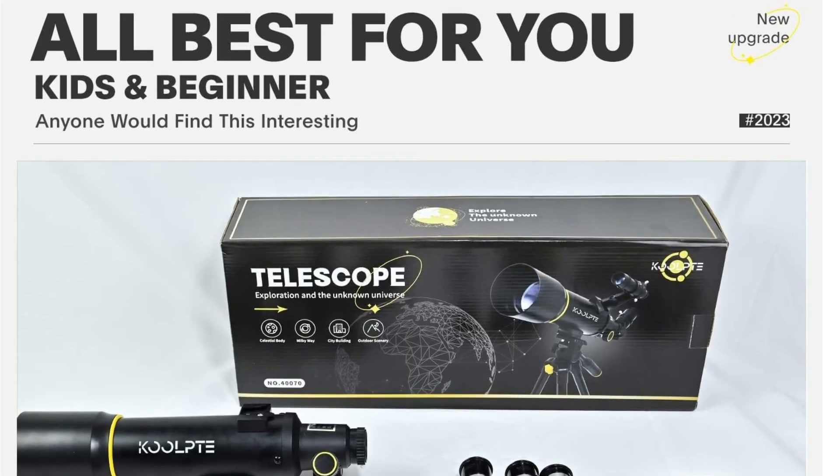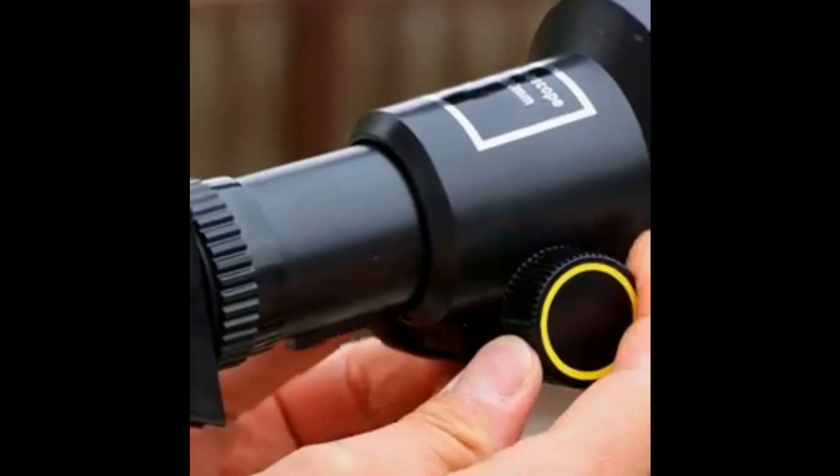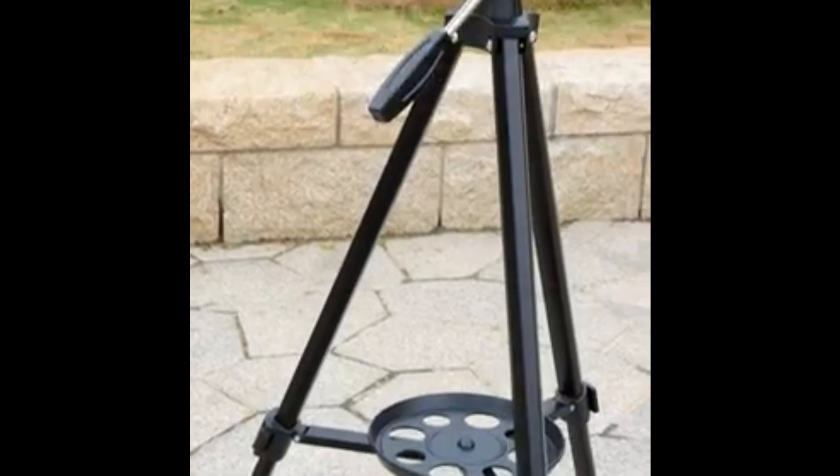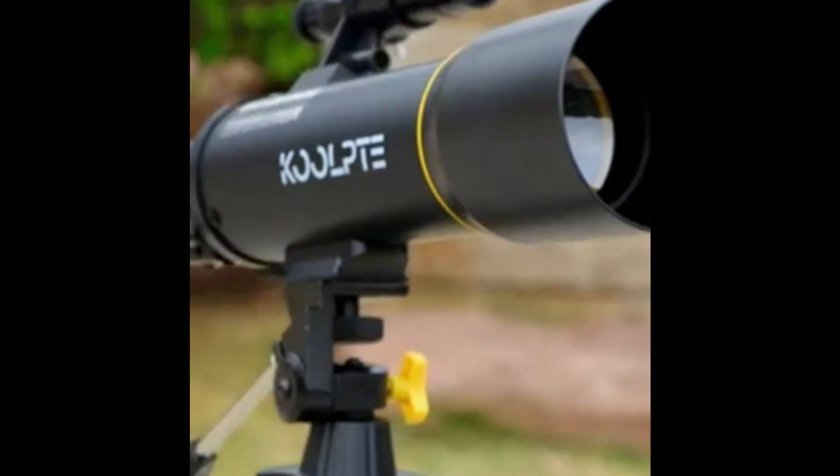Portable and stable, comes with a phone adapter and adjustable aluminum tripod. You can mount your phone onto the telescope with the adapter to take photos or videos. The tripod offers stable support and is easily adjustable for better viewing.